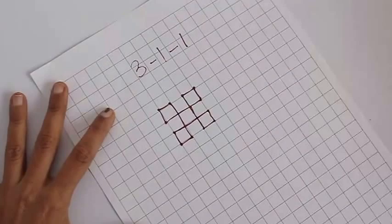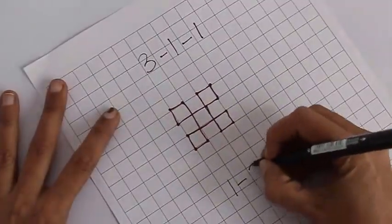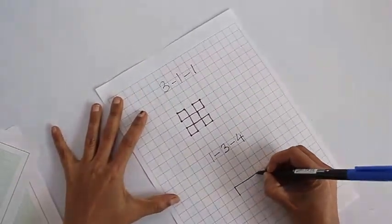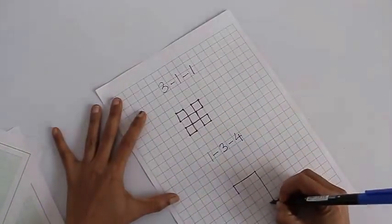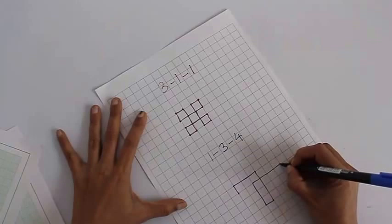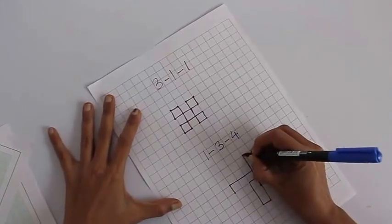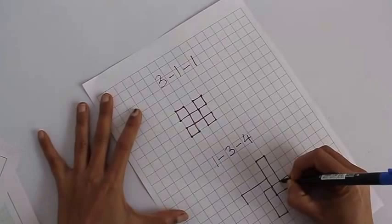So you can make so many different figures like with this 3, 1, 1 pattern. All you have to remember is to turn clockwise or if you want, all the time anti-clockwise. Just turn 90 degrees and follow the pattern. And with just amazing magic, you will make a nice pattern and return to the original starting point.